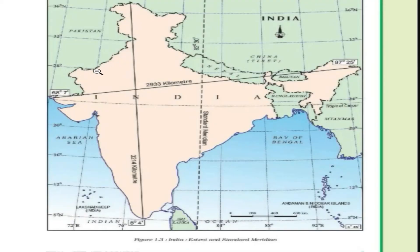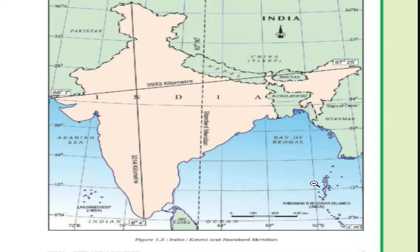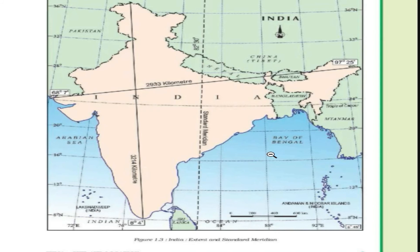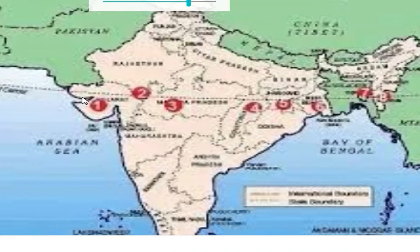India's land borders stretch for 15,200 kilometers. The coastline is 7,516.6 kilometers. On the northern borders we find mountains, and there are also plateaus found within India.